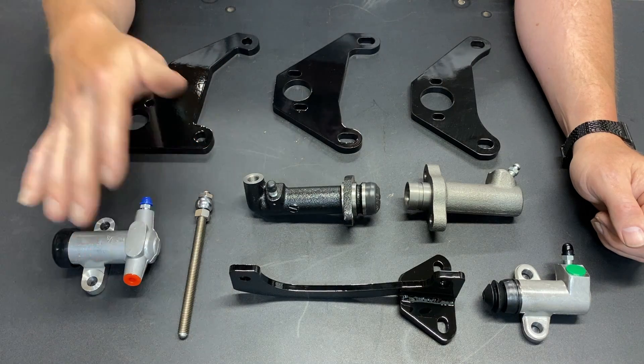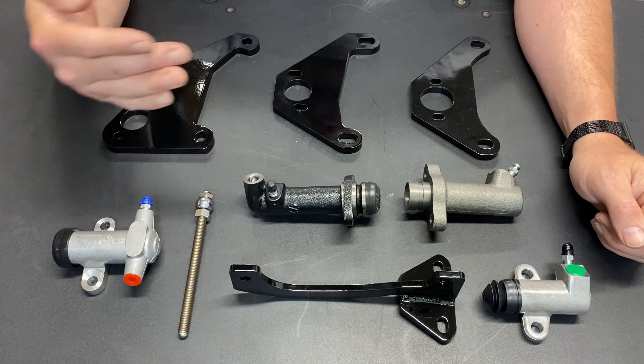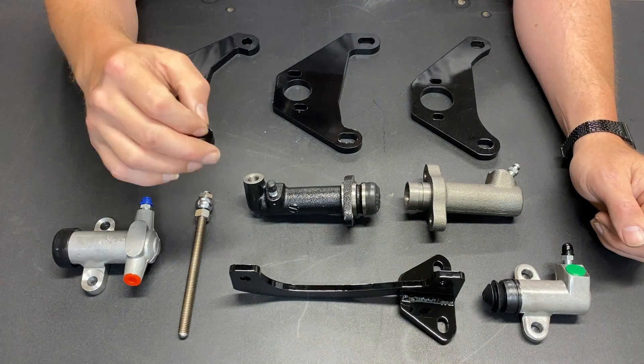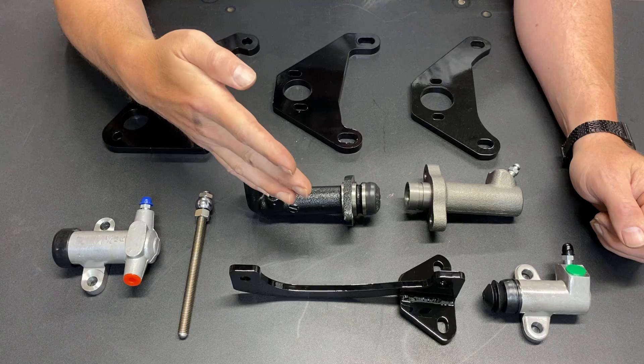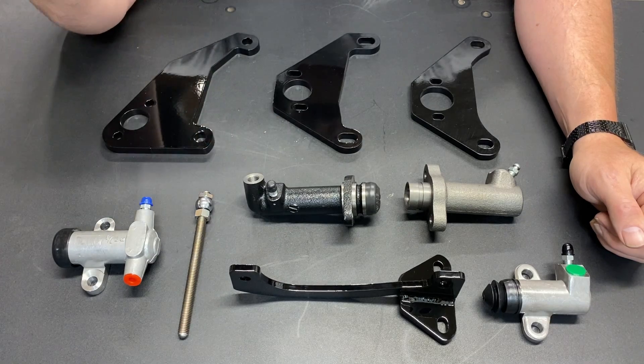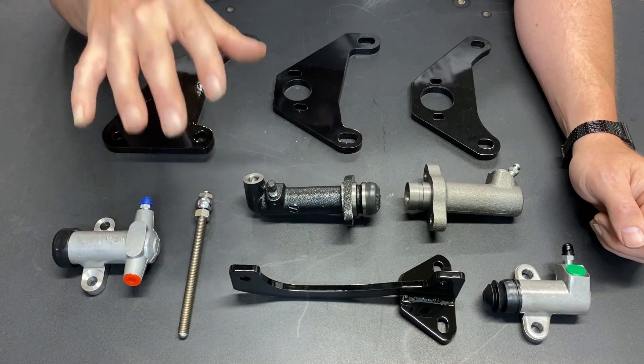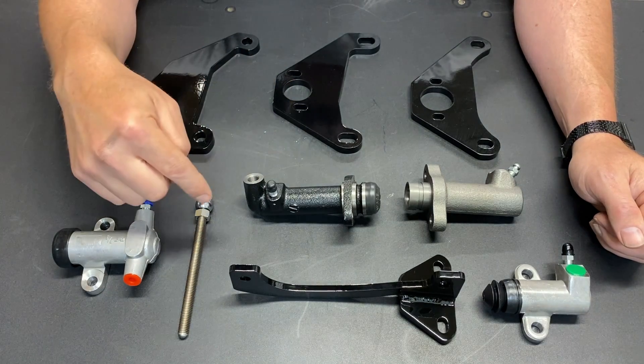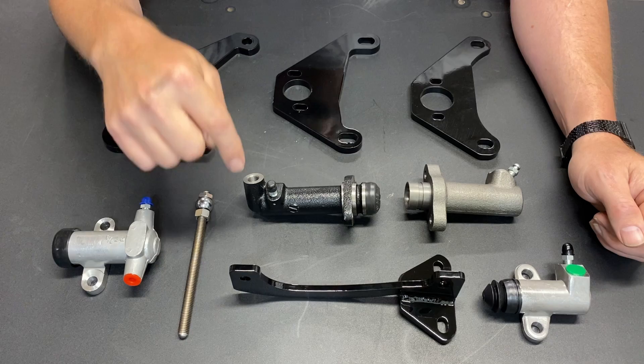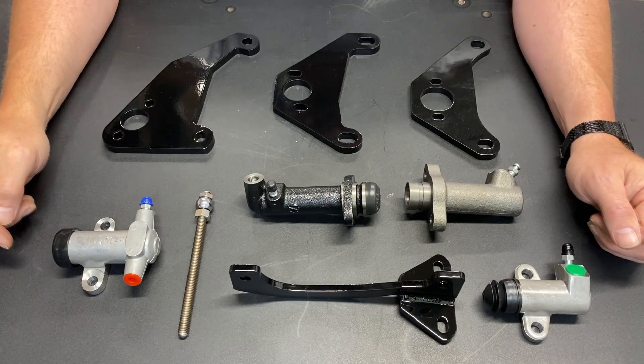A seven eighths inch bore master cylinder will likely work with either of these slave cylinders. But a three quarter inch bore or a 13 sixteenths inch bore will also likely work. And the advantage of going with a smaller bore master cylinder, if it has sufficient fluid volume, we'll come back to that, is reduced pedal effort.